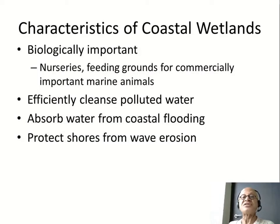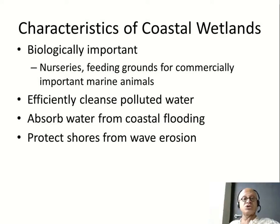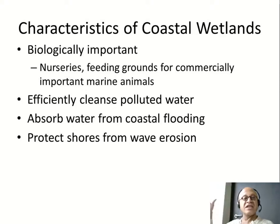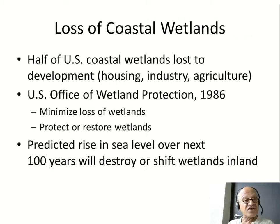Mangroves provide many ecosystem services. They serve as nurseries and feeding grounds for many commercially important marine animals. They efficiently cleanse polluted waters, acting as a transition zone from land to ocean by taking out nutrients and many pollutants, leaving cleaner water entering the ocean. They also act as wave dampers when cyclones come in, absorb coastal floodwaters, and protect shores from erosion — just as any vegetation and soil makes land harder to erode, like a forest.